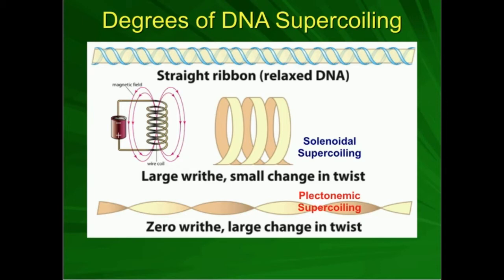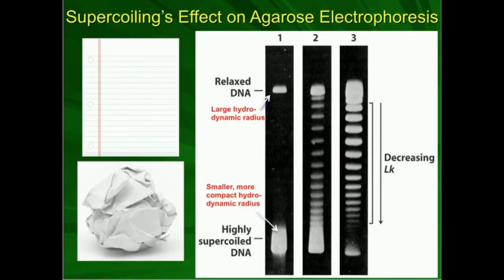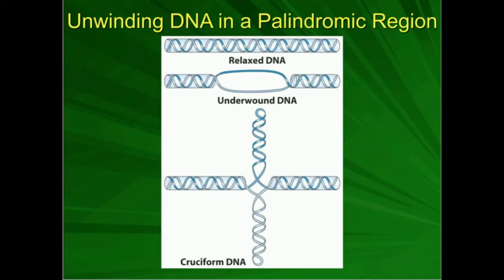Whenever we unwind the DNA — whether due to replication, transcription, or heating the DNA in the lab — if the unwound region has a palindromic sequence, we can actually form something called a cruciform DNA. This is not very common because palindromic sequences are not that common, but if unwinding of DNA occurs at a palindromic sequence, then cruciform structures form.